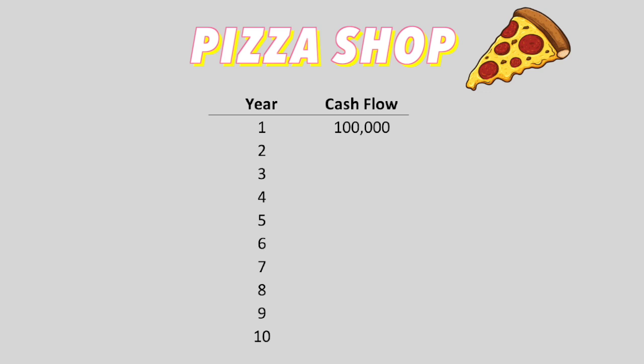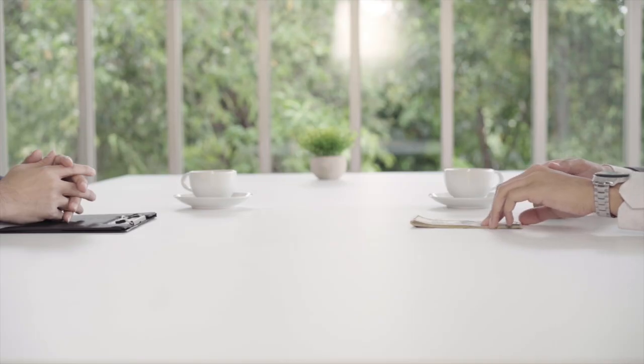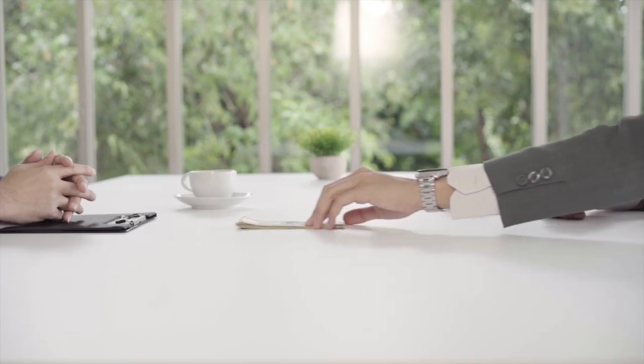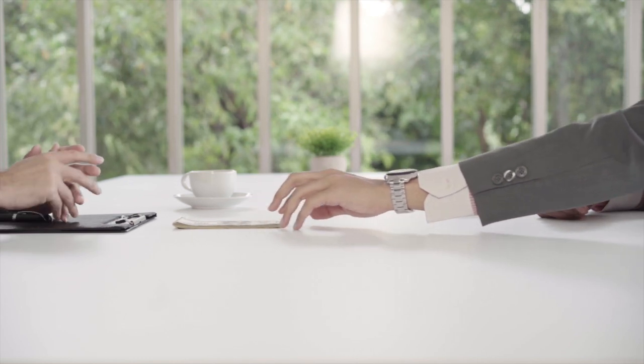Let's say this pizza shop does $100,000 in cash flow during the first year. To keep things simple, let's say this shop is extremely consistent in its growth and is able to grow its cash flow 10% a year as it sells more pizza and raises the price of each pizza by a little bit each year, and the customers are happy to pay the increase. Then at the end of year 10, you get an offer from a different investor to buy your pizza shop at such a high price you just can't refuse — you sell for 15 times year 10's cash flow.